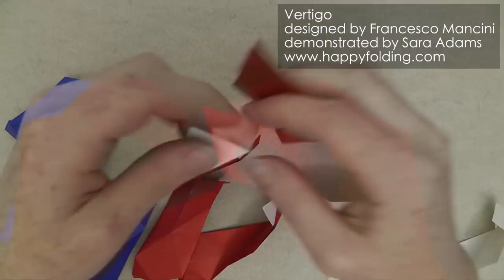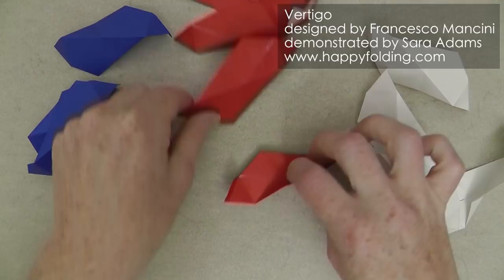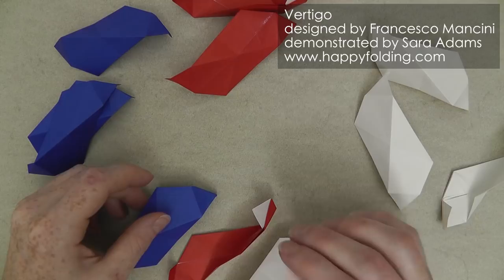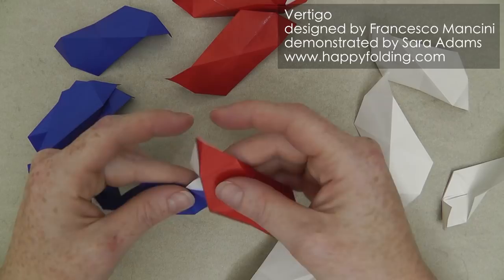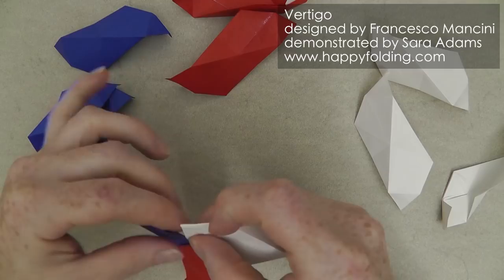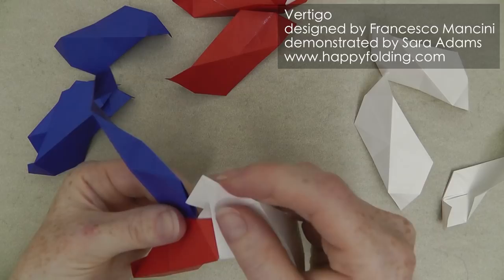Once all of these are done, we're going to assemble the model. And we're always going to combine three different colors into one point, so that we get four points and then combine them. The first two we're all going to assemble with the same coloring scheme. So here I'm going to insert the blue into the red. And then the red into the white. And the white into the blue.